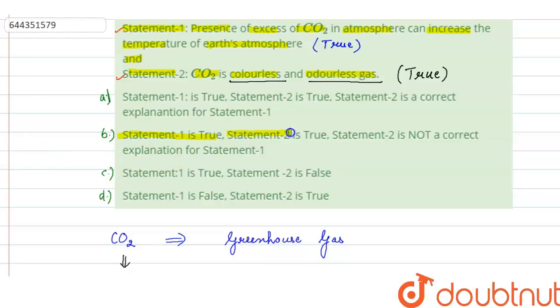So here the correct option will be option B. Statement 1 is true, Statement 2 is true, and Statement 2 is not a correct explanation for Statement 1. So option B is the answer.